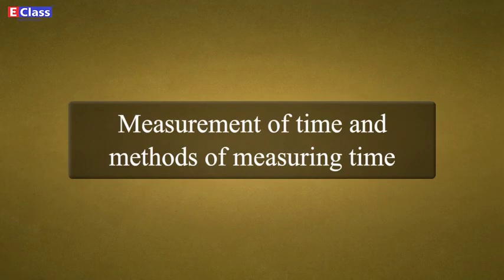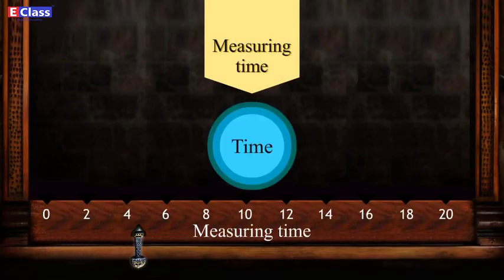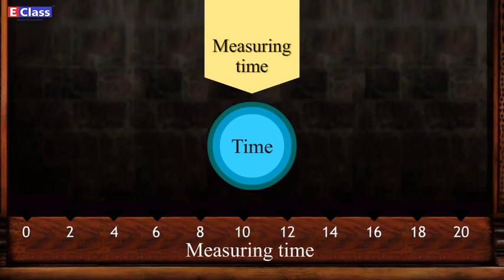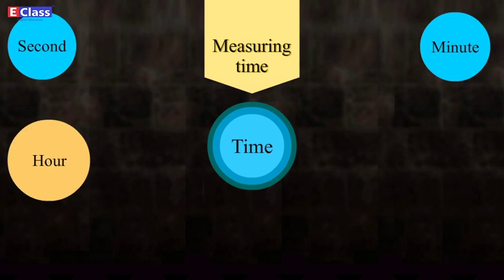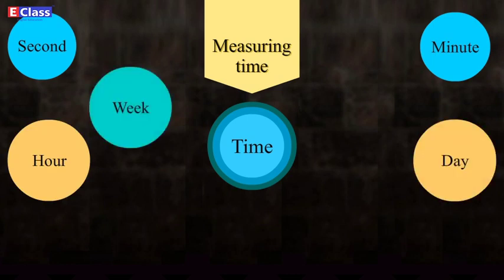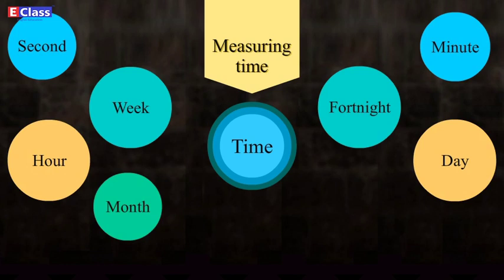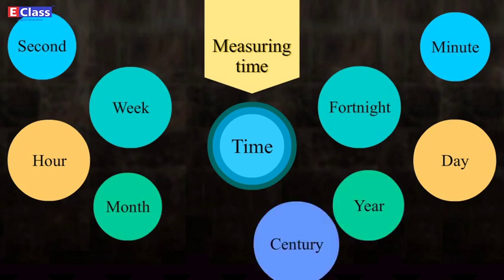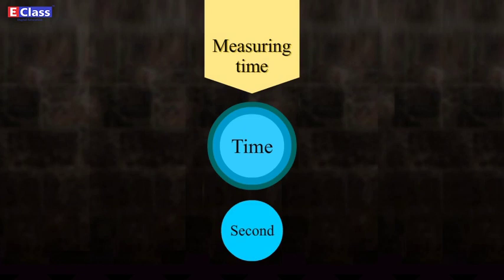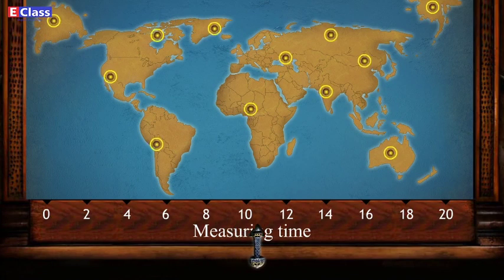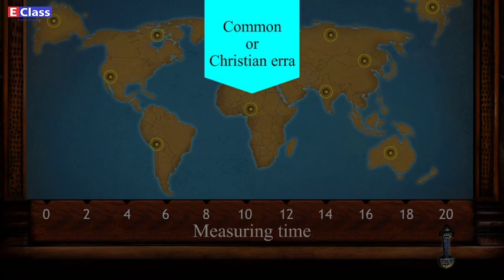Measurement of Time and Methods of Measuring Time. To measure time is to measure the length of time. We know the following units: Second, Minute, Hour, Day, Week, Fortnight, Month, Year, Century, and Millennium. A second is the smallest of these units. There are various methods of measuring time in different parts of the world, of which the Common or Christian Era is the most widely used. We generally indicate a particular day by writing its date, consisting of the day number, the month, and the year.